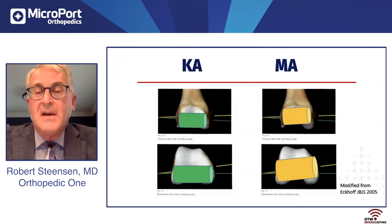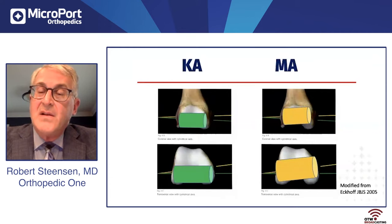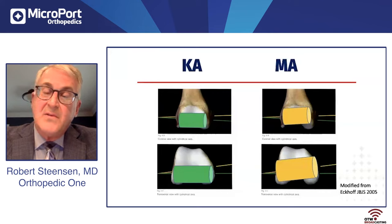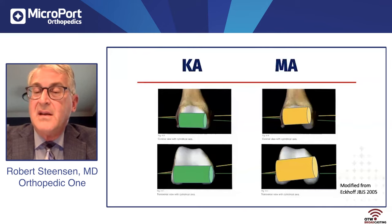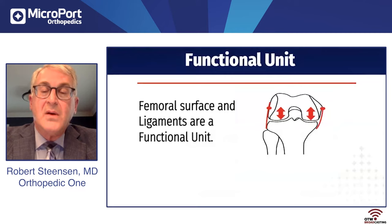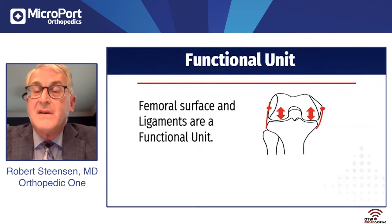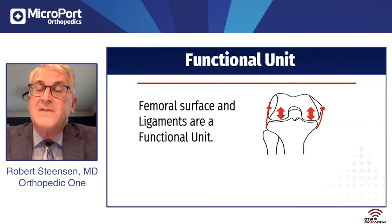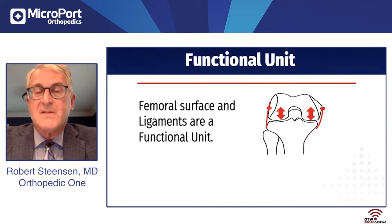If you follow the trans-epicondylar axis in extension and flexion, you can see it elevates the joint line somewhat on the medial side for both your distal femoral cut and in flexion. People commonly say they externally rotate three degrees, but in that sense you might be elevating the posteromedial joint. I consider the femoral surface and the ligaments as a functional unit — the tibia rotates around the femoral cylindrical axis. If we match that surface, the ligaments will sense this as a more normal knee. If you don't match it, the ligaments will sense something unnatural.